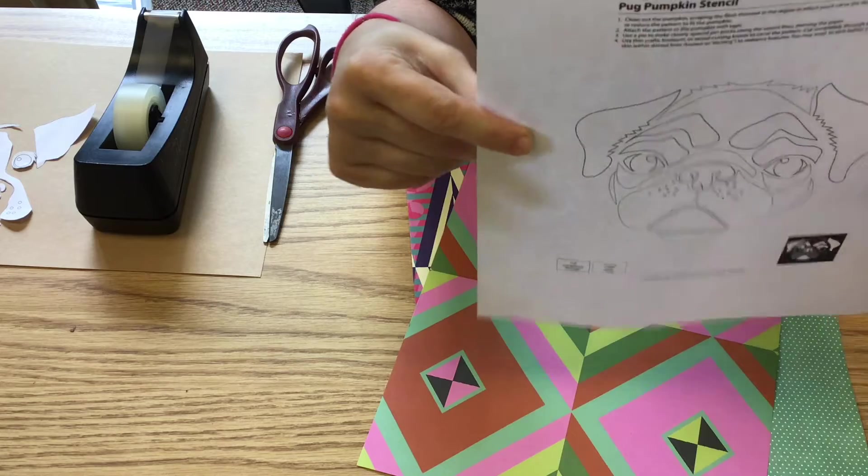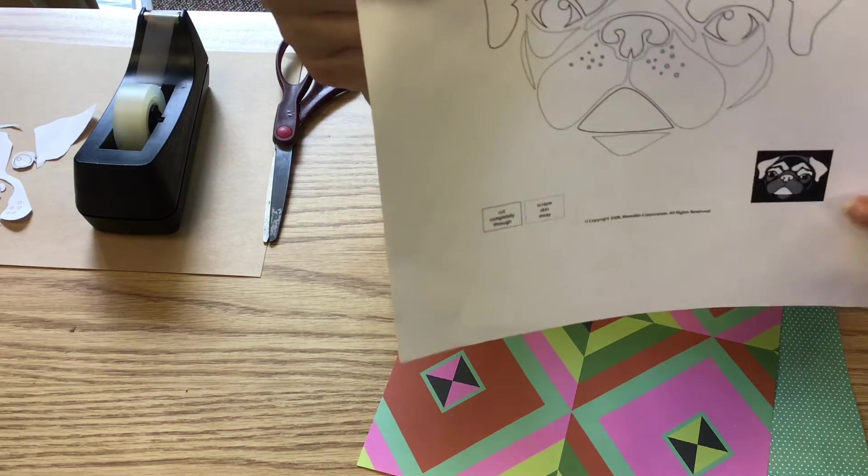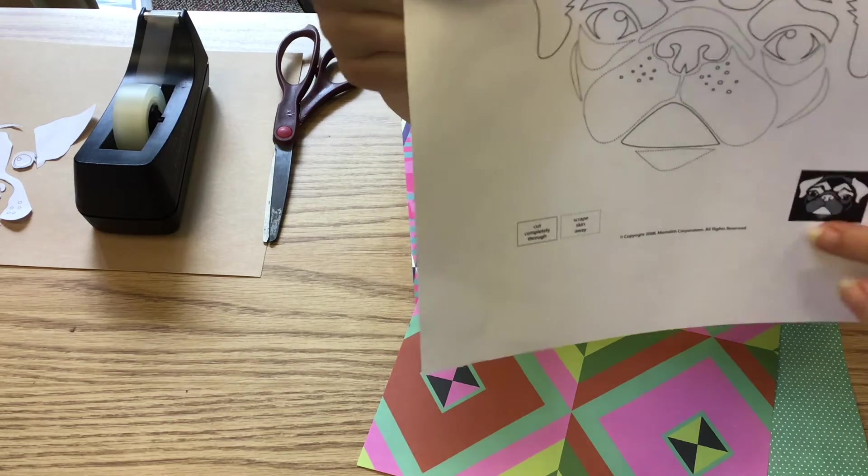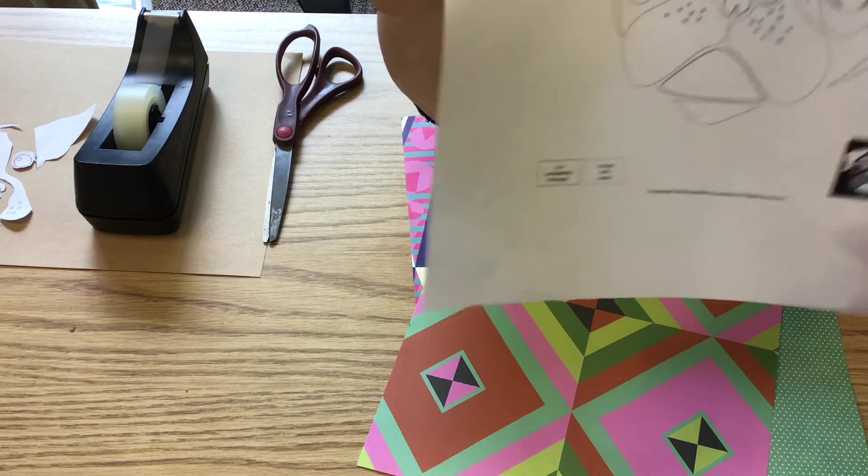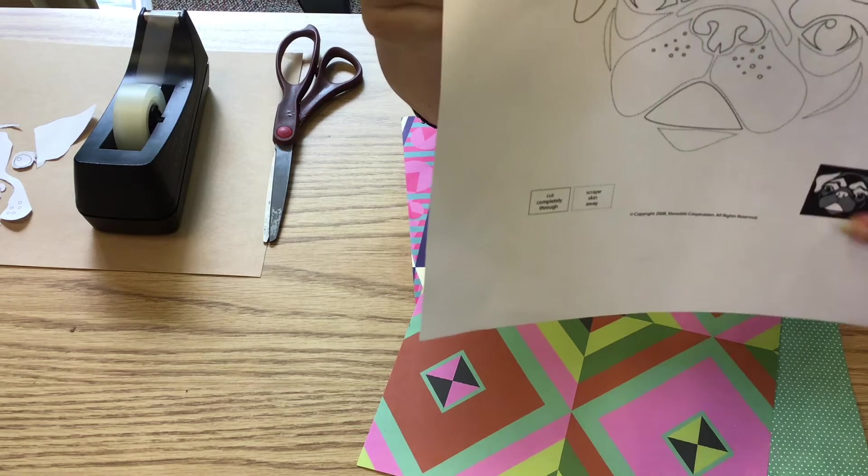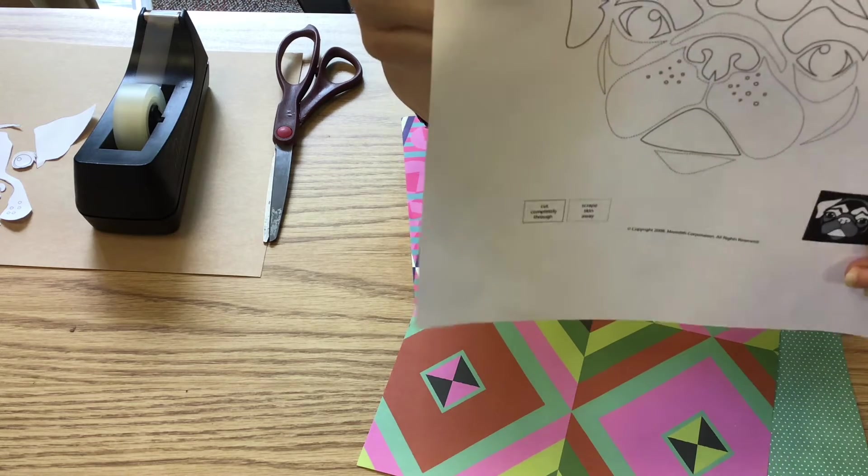So if you were to do it on the pumpkin it would be a little bit different. And if you look in the bottom corner of each pattern, it shows you what the finished product looks like. Anything that's dark black in here is going to be the paper background when you finish.